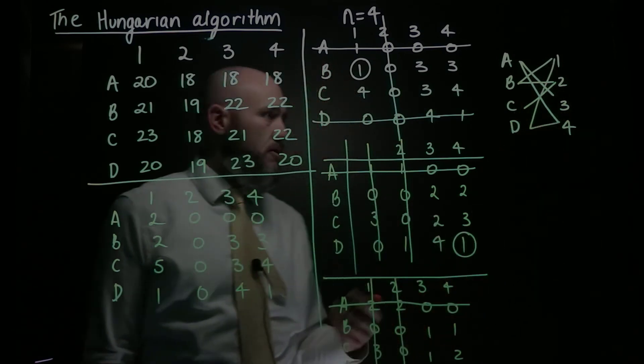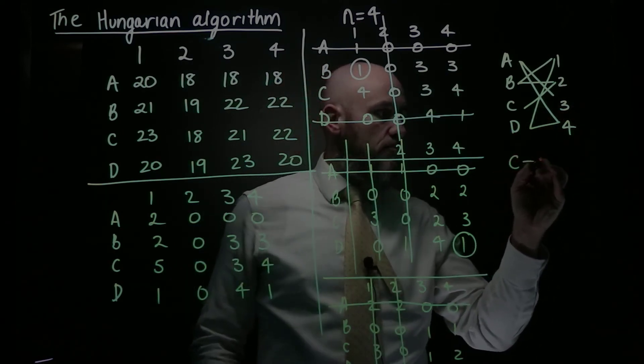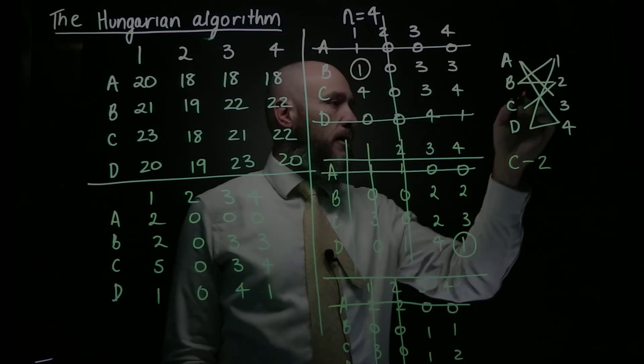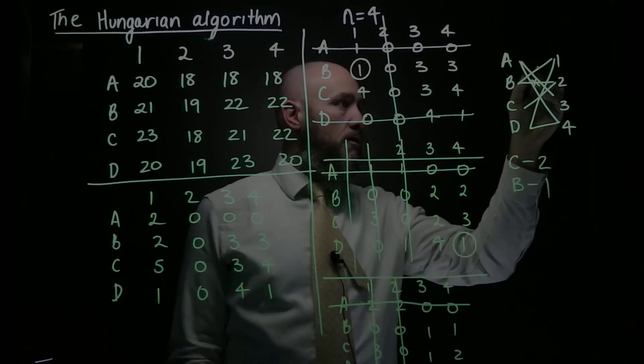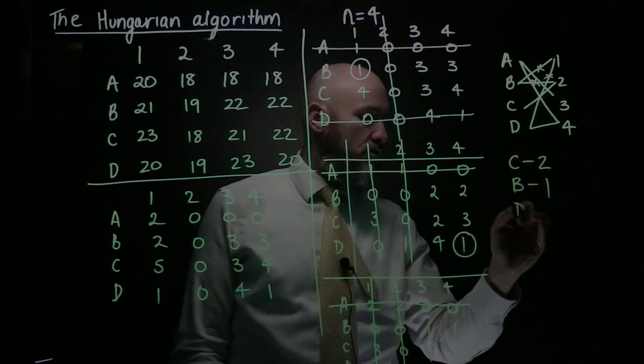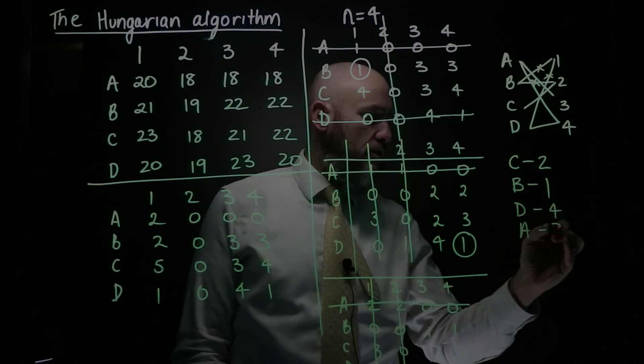So I'm going to start with C, because C is the obvious one, I could start with 3 as well, which can only be A, but C has to match to 2, and that means that B can't match to 2, so B has to match to 1, and that means that D can't match to 1, so D has to match to 4, and that of course means that A has to match to 3.